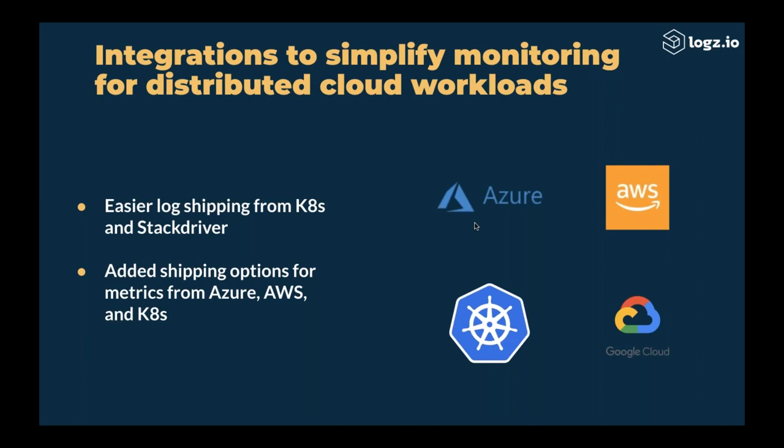In 2019, we've added close to 100 integrations — integrating all of the Azure components and all the different Azure offerings, and we've added a bunch of AWS integrations, especially around Kubernetes, Docker, ECS, Fargate, and EKS. We also introduced new, simple-to-use connectivity to Google Cloud, and a lot of other security device integrations that I'm going to show you in a minute.